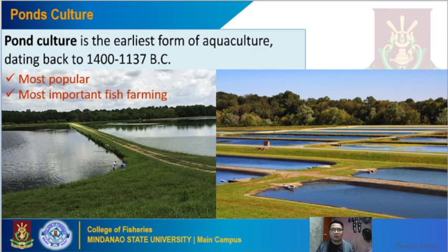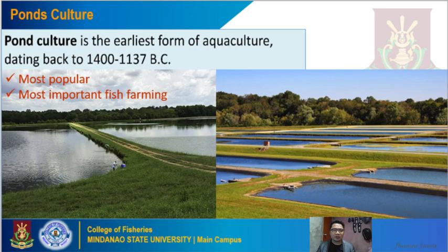Another culture system is pond culture, which is limited to freshwater only. This is the earliest form of aquaculture, dating back to the 1400s to 1137 BC. It is considered the most popular and most important fish farming culture system. As previously defined, it uses an enclosure made with an earthen embankment and is limited to freshwater environments only.